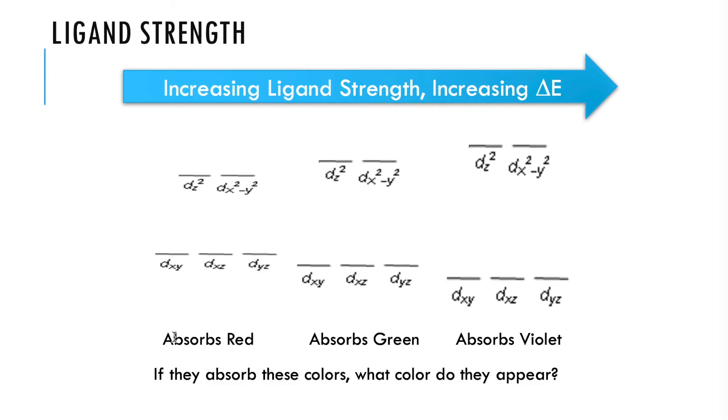So for example, here we've got three different ligands. They are each binding, but they cause different amounts of disruption or electron-electron repulsion when they're binding to the metal, and so they're actually absorbing different colors. So just to review from what we've learned about before, if these things are absorbing red, green, and violet, respectively, what colors should they appear? Go ahead and pause the video and think about that for a minute, and then I'll tell you the answers.